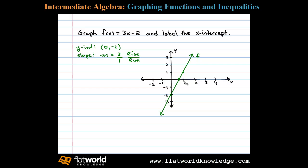Now the x-intercept has a y value of 0, and so in this case we'll set f(x) equal to 0 and solve for x. Here we have 0 = 3x - 2. Adding 2 to both sides, 2 = 3x.